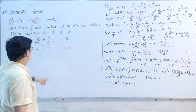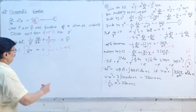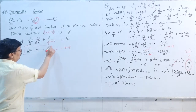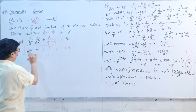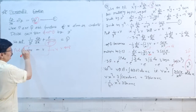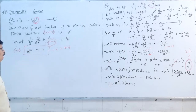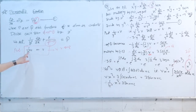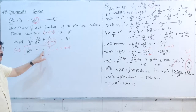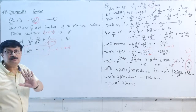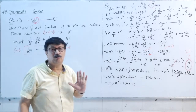Then in such a case, put 1/y^(n-1) equal to v. This is a very, very important substitution — 1/y^(n-1) = v is the simple formula to convert a Bernoulli's equation into a linear equation.